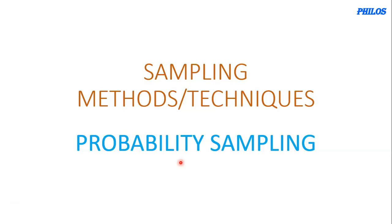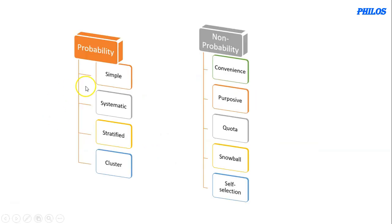For the probability sampling method, every member of the population has a chance of being selected in the sample. We have four probability sampling methods: the first is simple random sampling, the second is systematic random sampling, the third is stratified sampling, and the fourth is cluster sampling. We are going to take them one after the other.